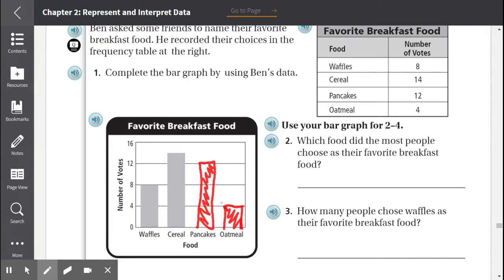Number 2, which food did the most people choose as their favorite breakfast food? So the one with the longest bar was cereal, and cereal had 14.